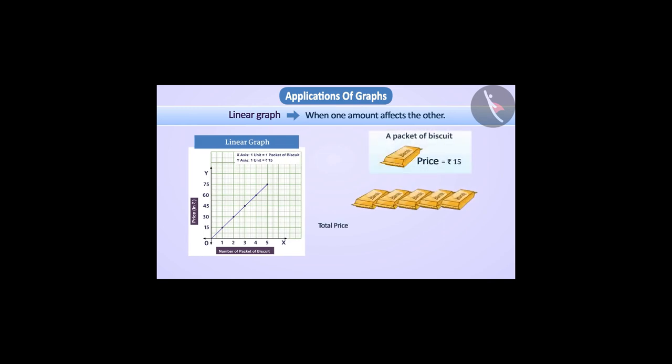For example, the total price of such items depends on the number of items. For example, the number of packets of biscuits and their price is represented here by a linear graph. Here, the number of items is a free or independent variable while the price of the items is a dependent variable due to the number of items. In the graph, independent variables are shown on the horizontal line and dependent variables on the vertical line.